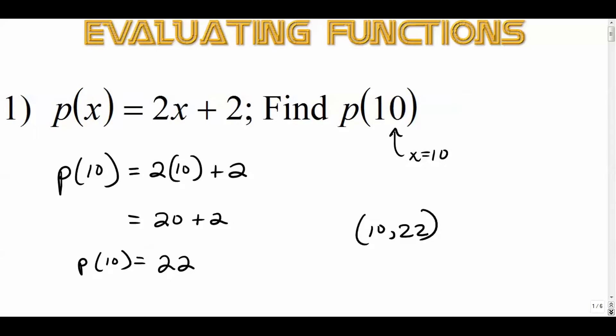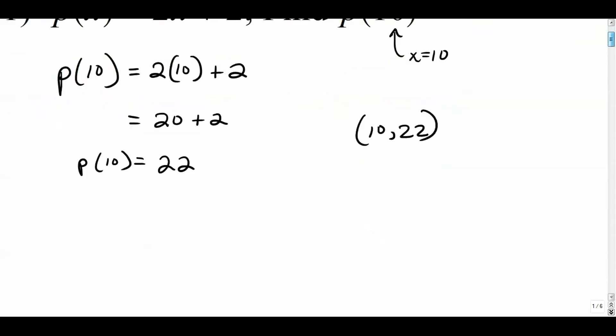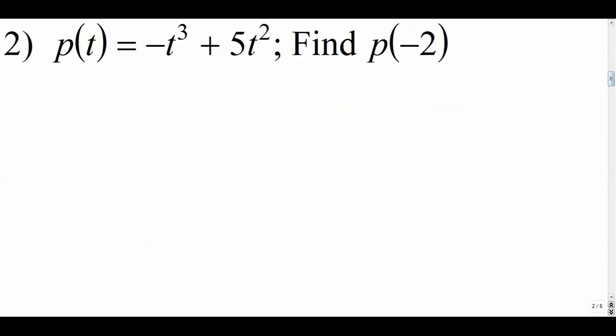So on this graph it would appear as the point 10 comma 22. Pretty simple. Number 2.